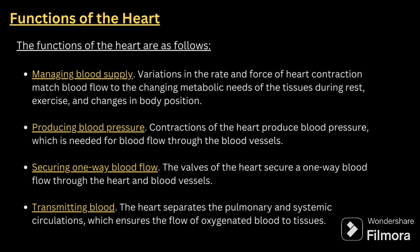You can stop with the points or elaborate them. For managing blood supply, the variation in the rate and force of heart contraction matches blood flow to changing metabolic needs of tissues during rest, exercise, and changes in body position. Producing blood pressure means the contraction of the heart is needed for blood flow through blood vessels. Securing one-way blood flow means the valves secure a one-way blood flow through the heart and blood vessels. Transmitting blood means the heart separates pulmonary and systemic circulation, ensuring flow of oxygenated blood to the tissues.